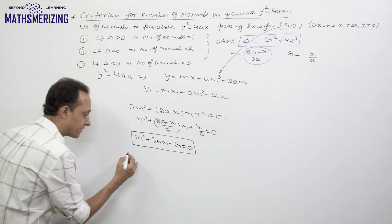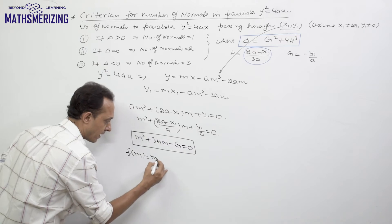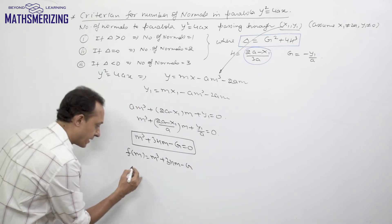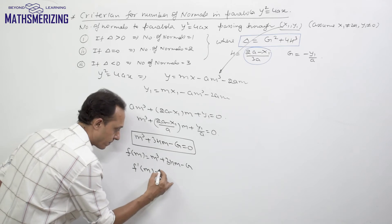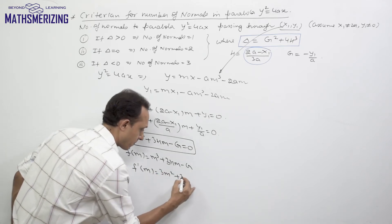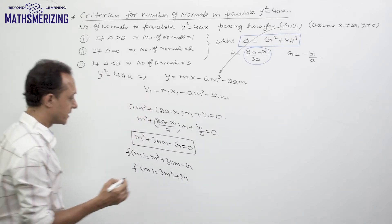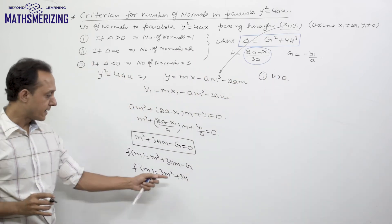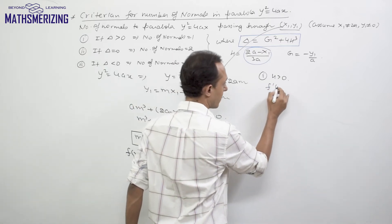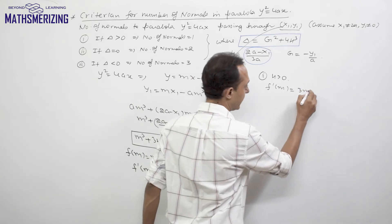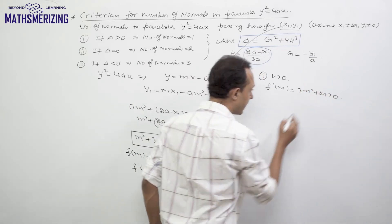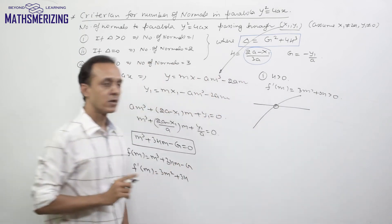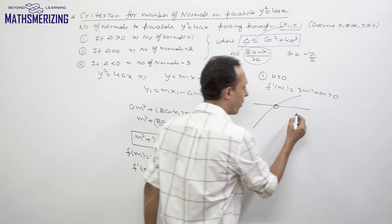Define f(m) = m³ + 3hm − g. Differentiating gives f'(m) = 3m² + 3h. When h is positive, f'(m) = 3m² + 3h is always greater than 0, so f is strictly increasing. A strictly increasing function intersects the x-axis at only one point, so there is only one real root and hence only one normal.